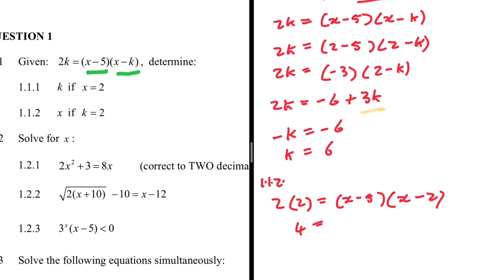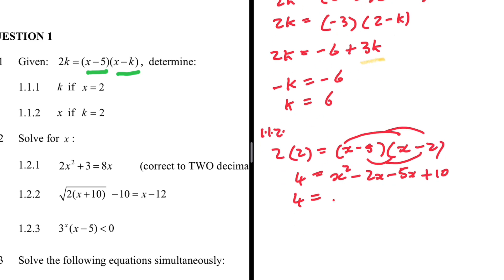Let's expand: x × x = x², x × (-2) = -2x, -5 × x = -5x, and -5 × (-2) = +10. So 4 = x² - 7x + 10, which gives us x² - 7x + 6 = 0.